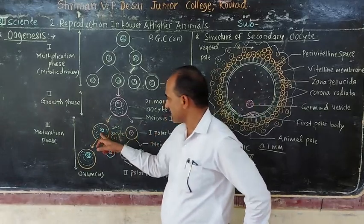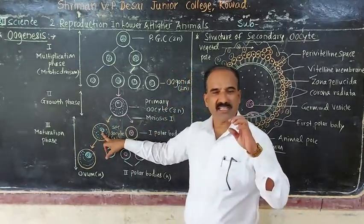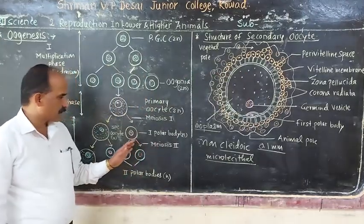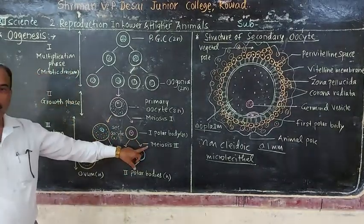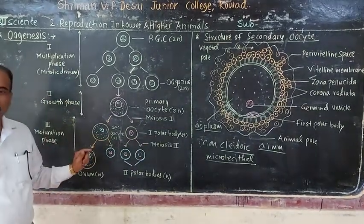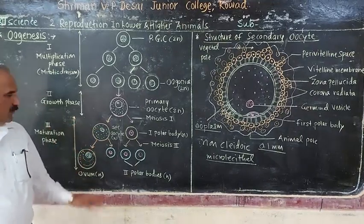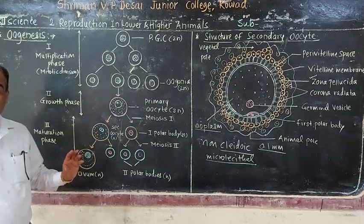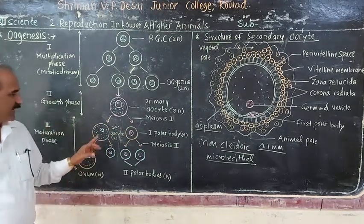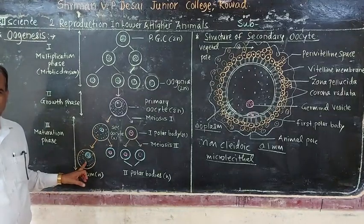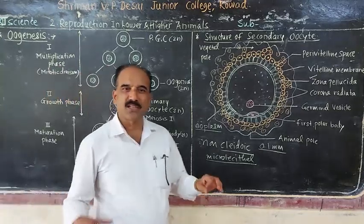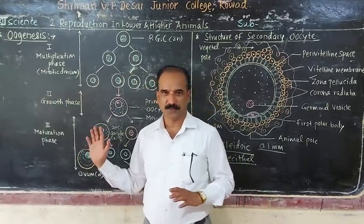The secondary oocyte is shed or released from the Graafian follicle at this stage. The secondary oocyte then proceeds through meiosis II up to metaphase II, and converts into the ovum or egg. This second meiotic division occurs in the ampulla of the fallopian tube.